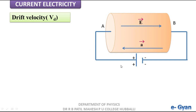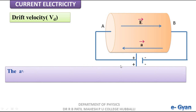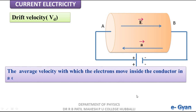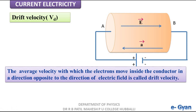Now let me define drift velocity. The average velocity with which the free electrons move inside the conductor in a direction opposite to the direction of electric field is called drift velocity.